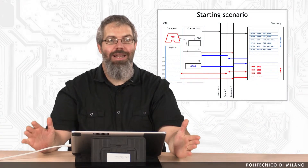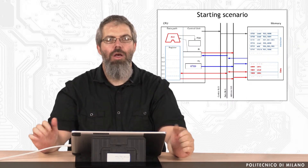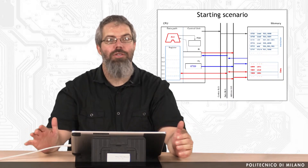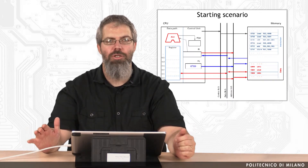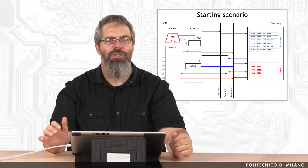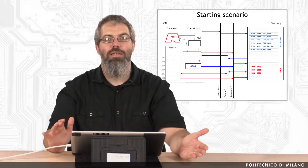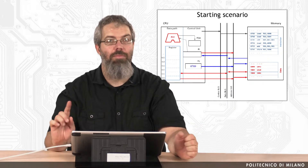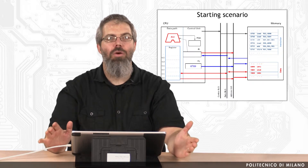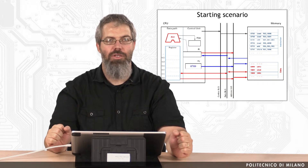Hi, and welcome back to this class! In the previous lesson we sketched the processor structure. We learned that a processor, regardless of its type, executes a program as a sequence of instructions that translate into useful computation for the software application. We took a super simple C instruction A = A + B + C and translated it into the corresponding sequence of assembly instructions. We realized that a single line of C code can be translated, because of the underlying architecture, into six assembly instructions.